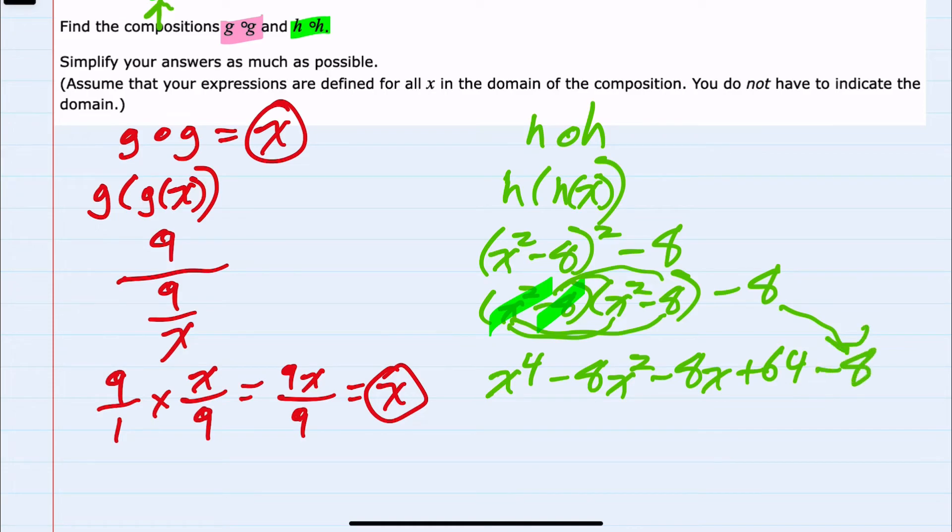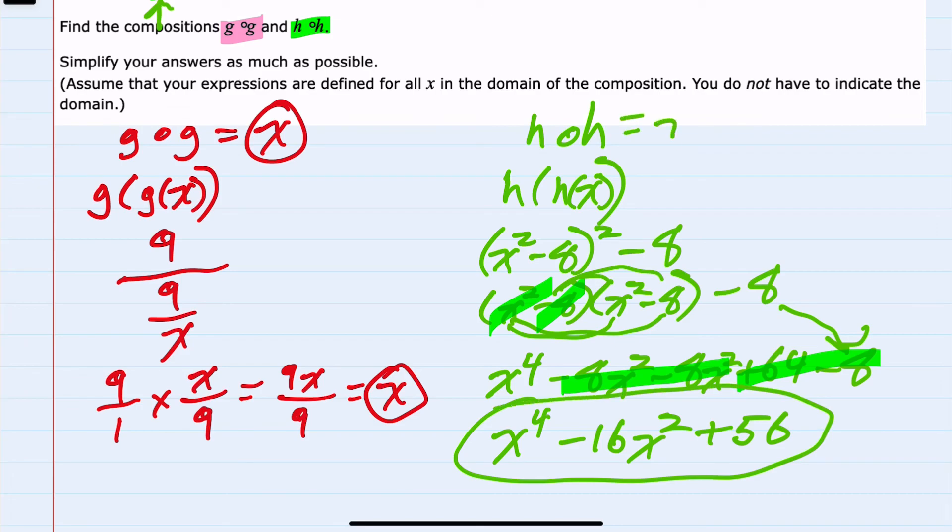We can now combine like terms. We only have one x to the fourth. These middle terms are both minus 8x squared. Those combine to be minus 16x squared. And then the integers, 64 minus 8, would be plus 56. This is simplified as much as possible. So h of h is x to the fourth minus 16x squared plus 56.